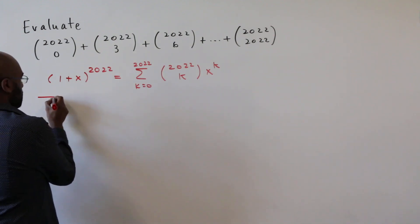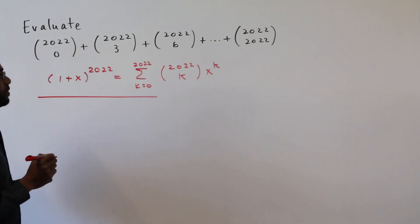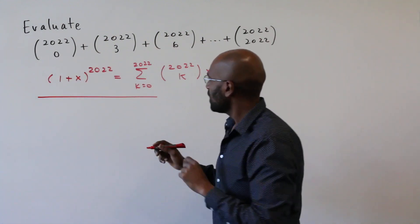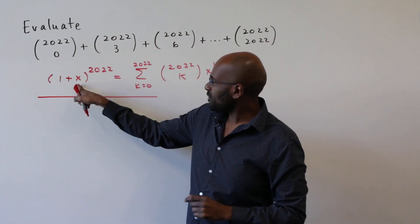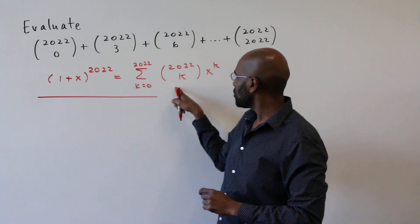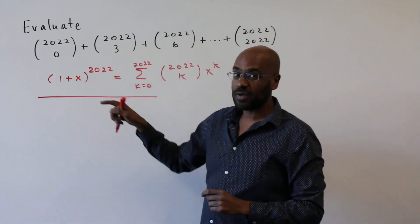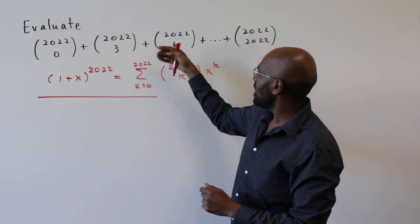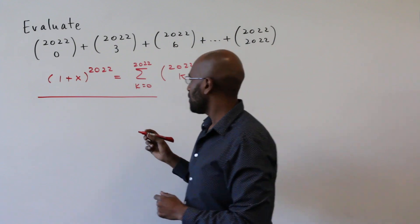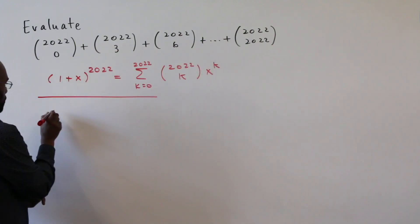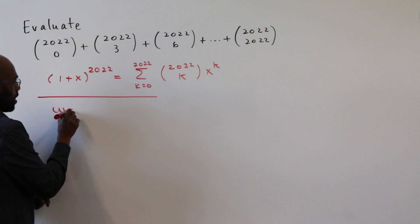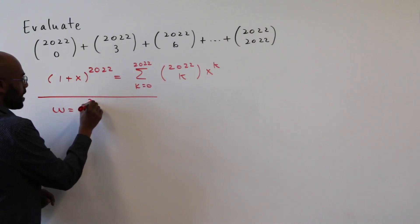So the key step in figuring this out is actually introducing evaluations of this particular expression for various values of x that allow us to eliminate everything that's not a multiple of three. And the way we're going to do that is by introducing the complex number e to the two pi i over three.